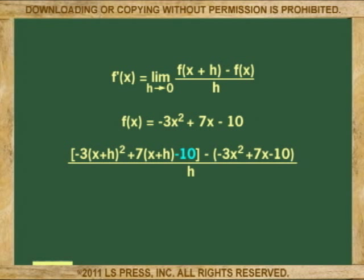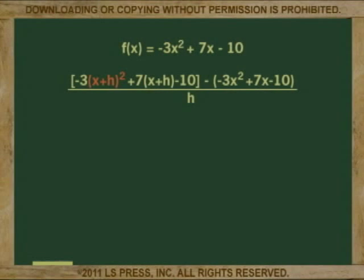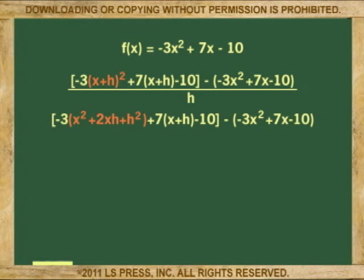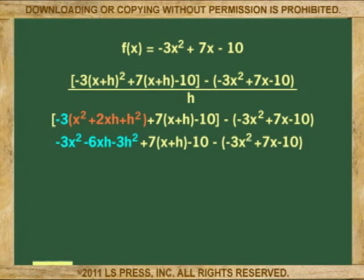This takes care of the x plus h. We continue with the function of x by repeating the original equation: negative 3x squared plus 7x minus 10, all of it over h. We now expand the binomial x plus h squared and get x squared plus 2xh plus h squared. The new trinomial gets multiplied by negative 3, and 7 gets multiplied by the x plus h, minus 10.